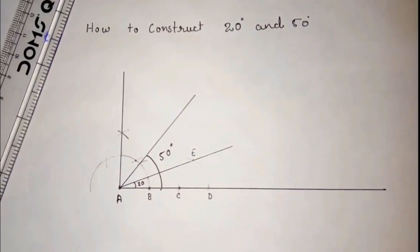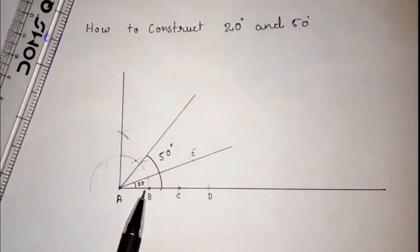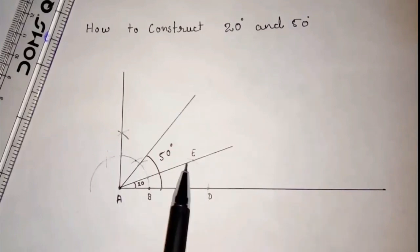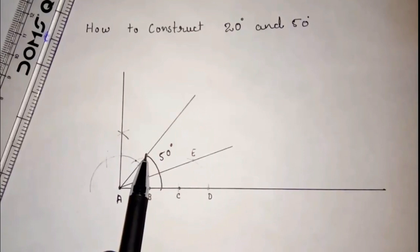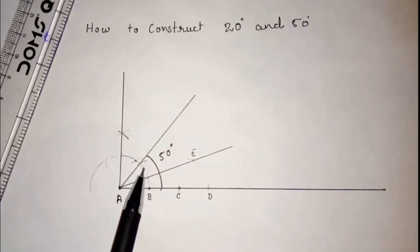So this way we can construct 20 degree and 50 degree. First we have to construct 20 degree. In 20 degree, we have to take the same radius three times. From C and D, we have to cut two arcs. Where the arcs intersect, we have to join a line. That will be 20 degree. Then the gap of 60 and 90 arc will be 30. We have to take 30 here and cut the arc, and then we have to join.